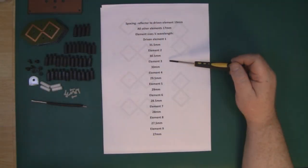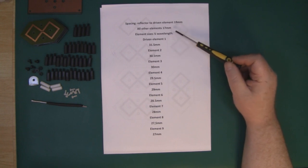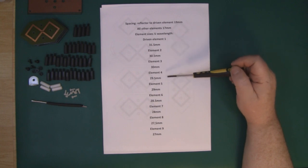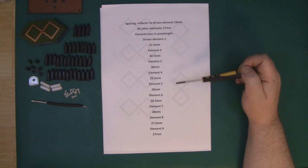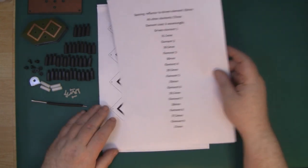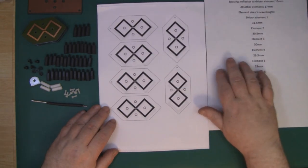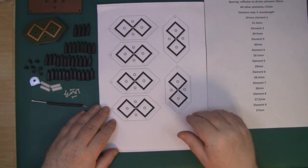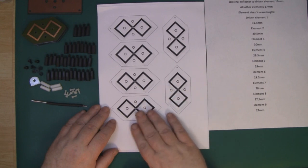For anybody who wants to have a go at making this antenna, I've put this PDF document together that you can download. It's got all the measurements for the spacings and the measurements for each one of the elements. I've also included the artwork as a PDF document so you can transfer this and have a go at etching them out yourselves.